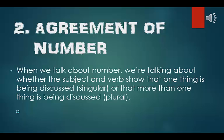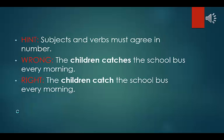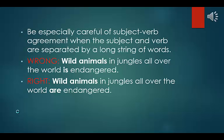Number 2: agreement in number. When we talk about number, we're talking about whether the subject and verb show that one thing is being discussed — singular — or that more than one thing is being discussed — plural. Subjects and verbs must agree in number. Wrong: the children catches the school bus every morning. Right: the children catch the school bus every morning. Be especially careful when the subject and verb are separated by a long string of words. Wrong: wild animals in jungles all over the world is endangered. Right: wild animals in jungles all over the world are endangered.